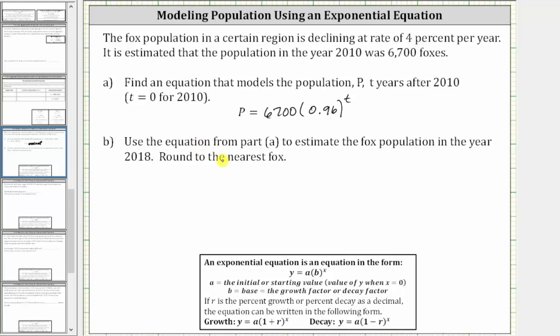For part b, we're asked to use the equation from part a to estimate the fox population in the year 2018. Remember, t is the number of years after 2010, which means t equals 2018 minus 2010, which equals 8. Now we substitute 8 for t in our equation.